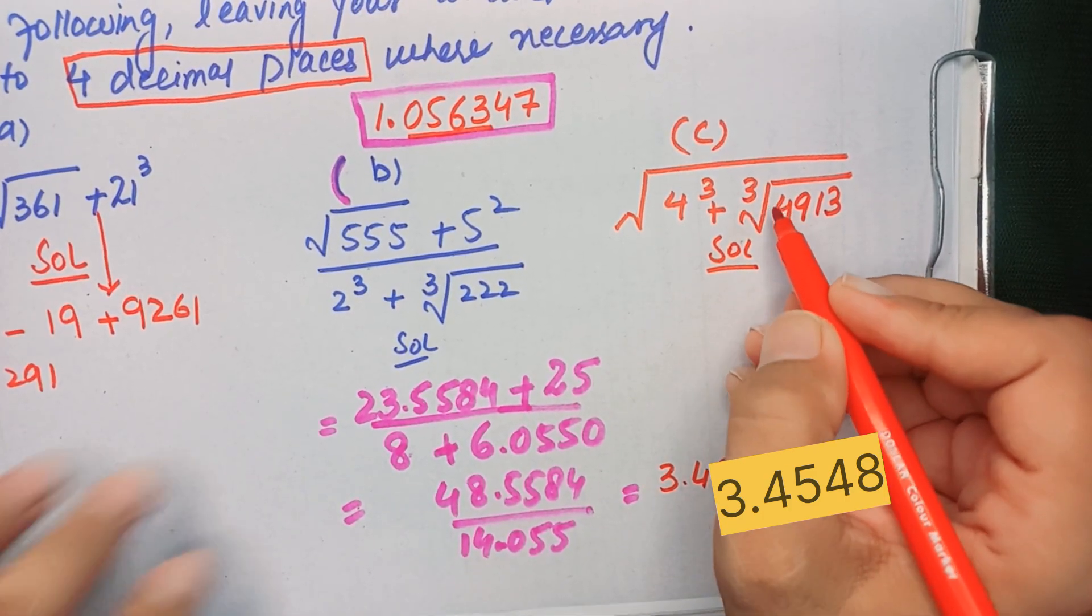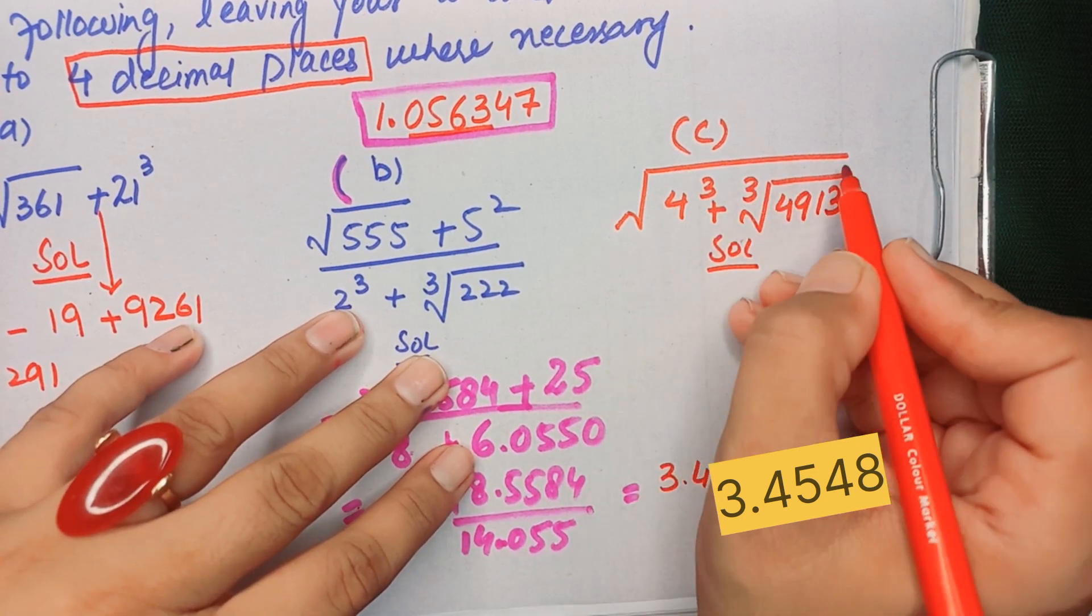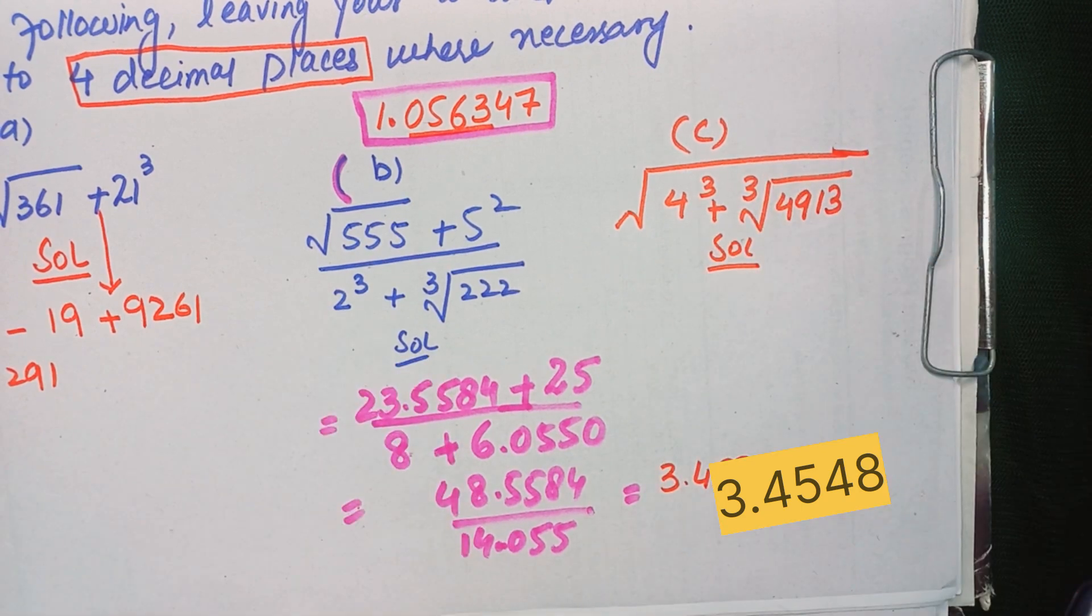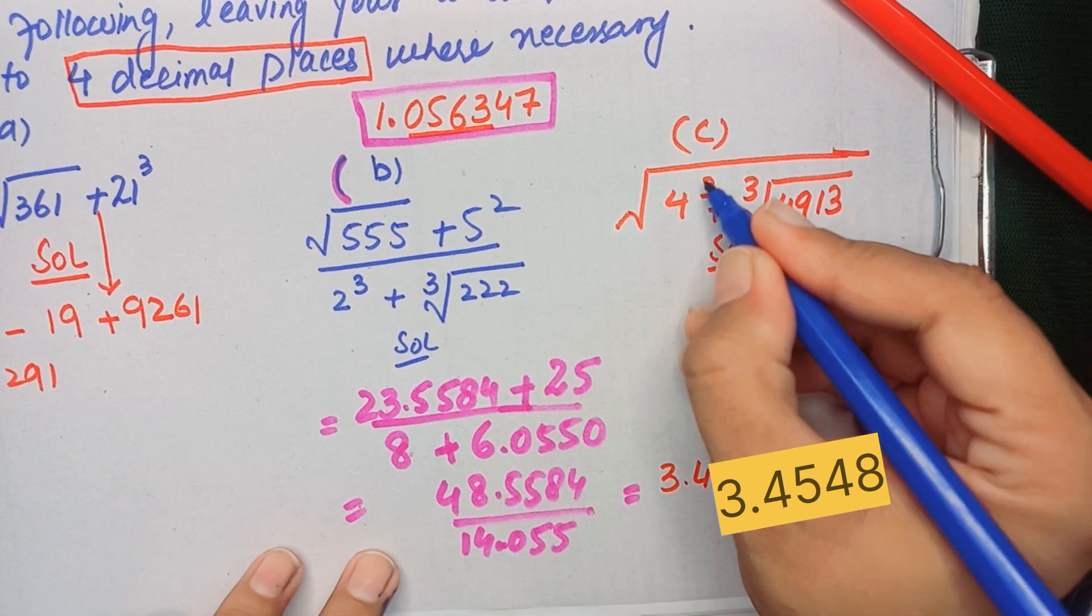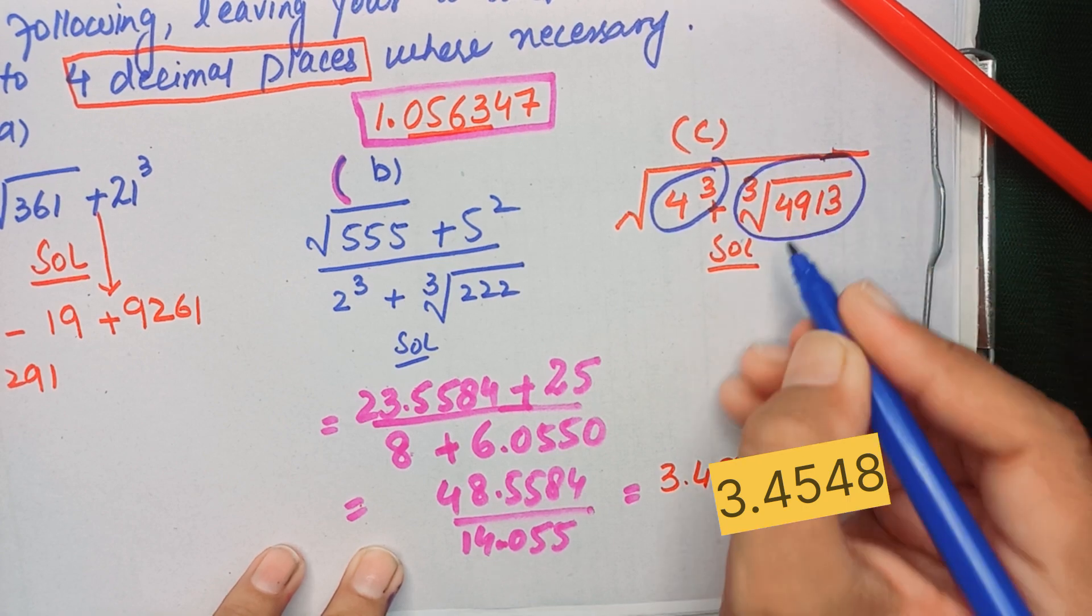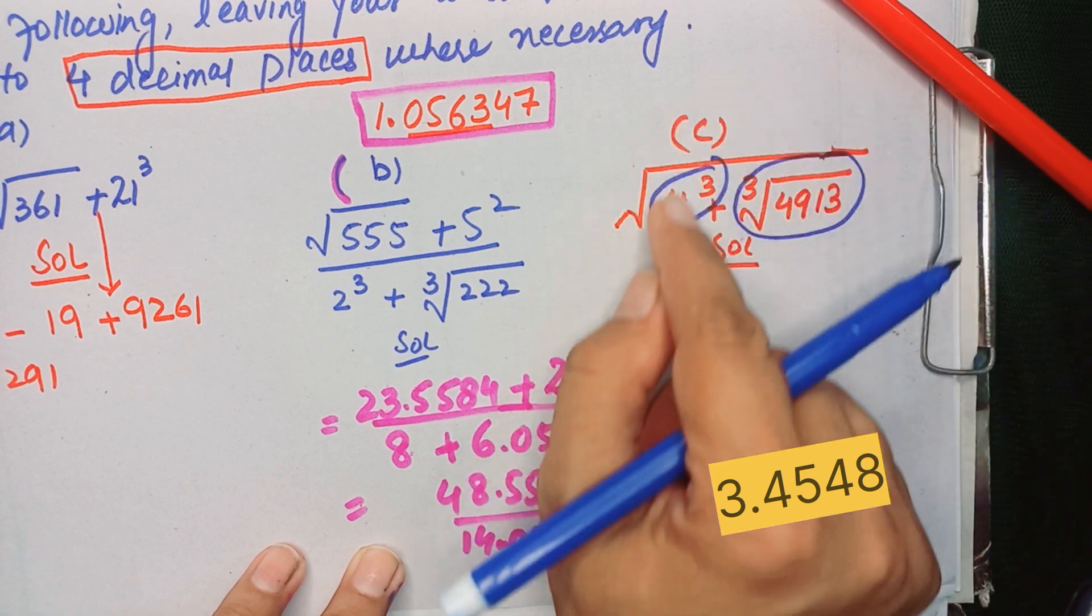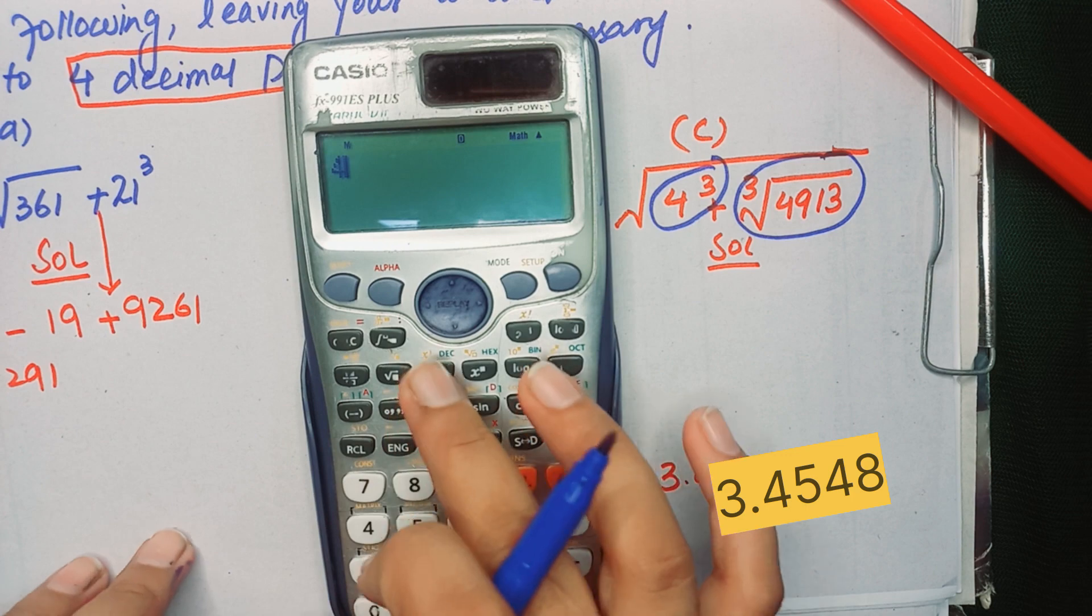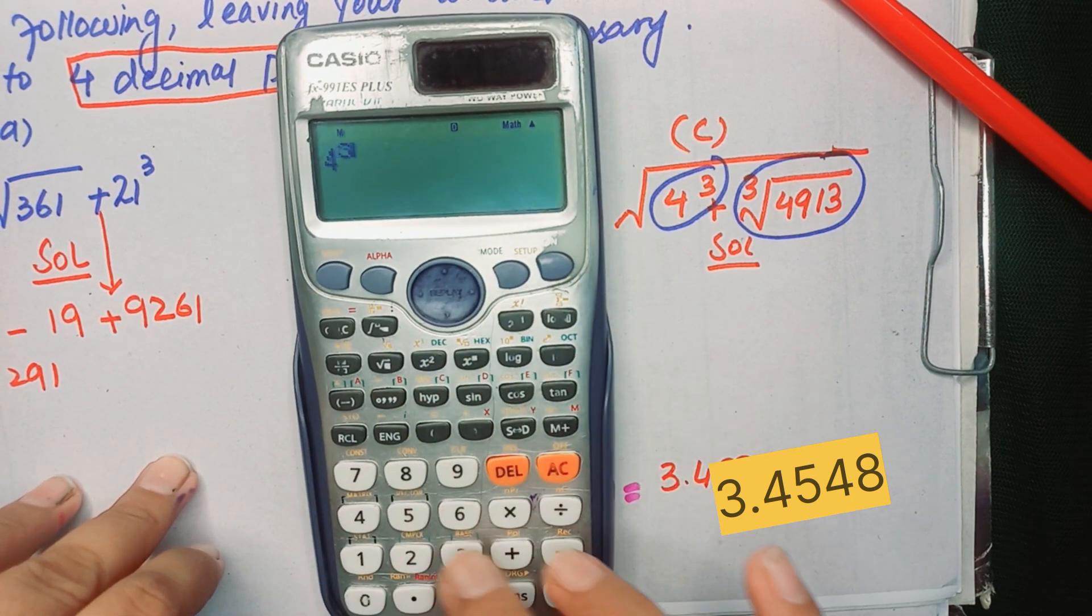Part C. Now you can easily attempt part C as well. You can see that there is a square root, and under this square root you have two values: one is 4 cube and the other is cube root, means you have to calculate the cube and cube root, and then you have to add, and then finally you will take the square root. So let's take 4 cube, it will give you 64, and the square root sign will be as it is.